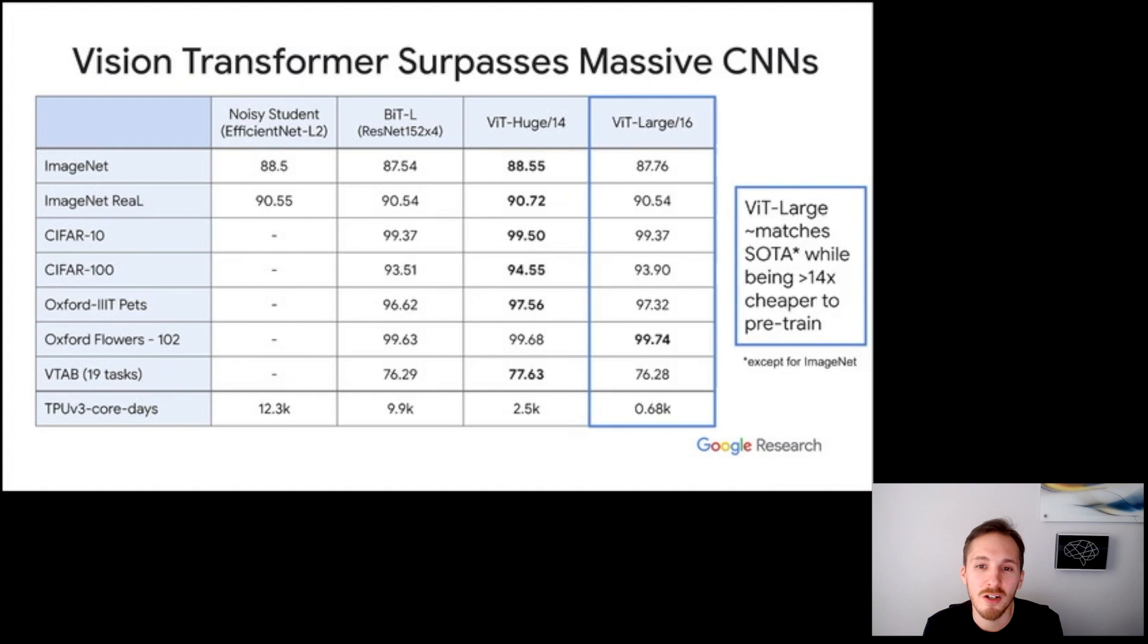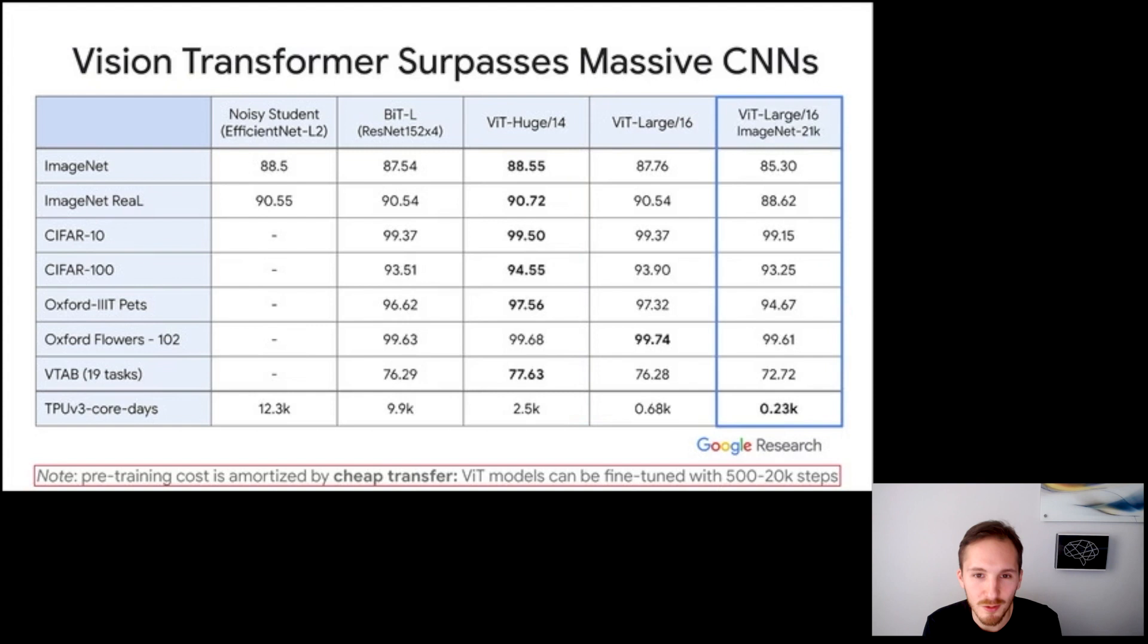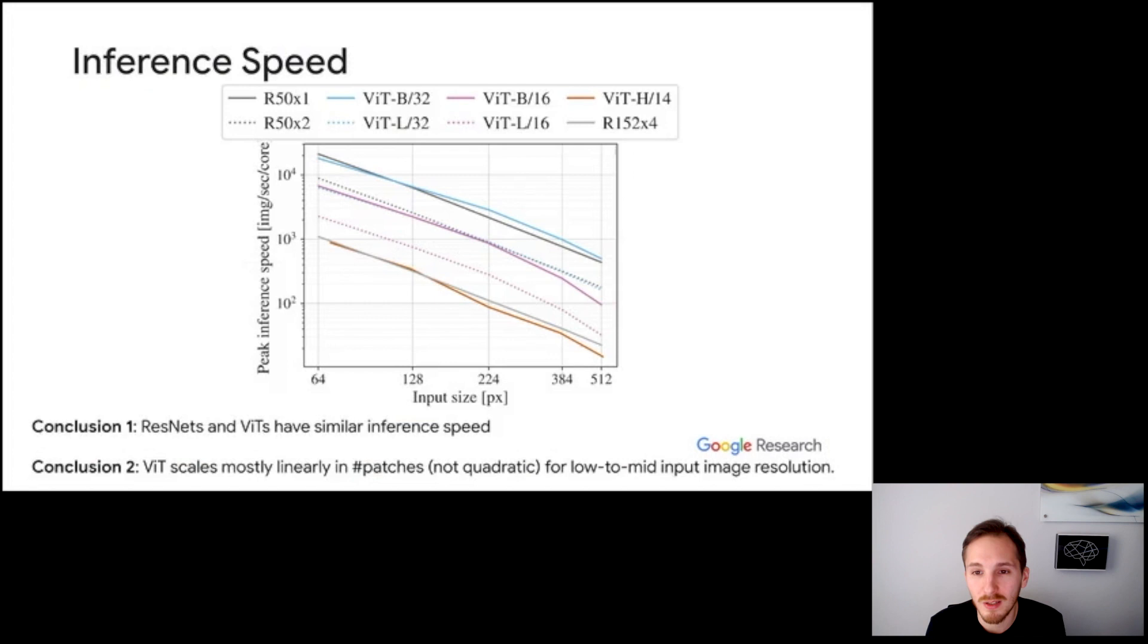Our largest model ViT-H/14 outperforms both baselines, in some cases by a substantial margin, while using roughly four times less compute to pre-train. Note that this advantage in pre-training compute may be caused not only by the architecture, but also by hyperparameter choices like learning rate schedule and such. A smaller model ViT-L/16 still matches our performance baselines on all datasets except for ImageNet, while being over 14 times cheaper to train. Finally, BiT-L/16 trained on ImageNet-21K still performs very well, takes even less resources to pre-train, and is released publicly.